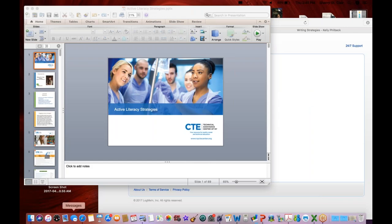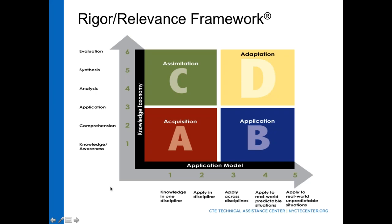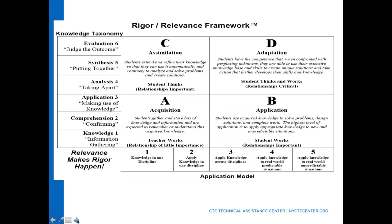The rigor and relevance framework is divided into four quadrants: A, B, C, and D. There is no bad quadrant — each is needed in the classroom. If I were to walk into your classroom and you were teaching in quadrant A, that does not mean bad instruction. If we never move out of quadrant A, then we have an issue. Quadrant D is where students are doing the majority of the thinking and work, and that's where we strive to get students. You will probably go through all quadrants throughout your instruction.